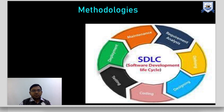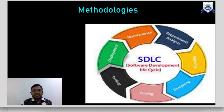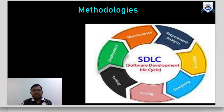Coming to methodologies — the software development life cycle consists of various phases involved from concept exploration to retirement of the software. From the idea of a software to when it becomes outdated, the phases include defining, designing, coding, testing, deployment, and maintenance. These are to be monitored by the software project management team to ensure the project delivers its value in conformance with quality.